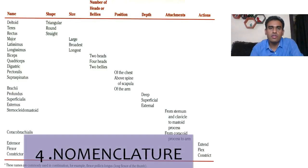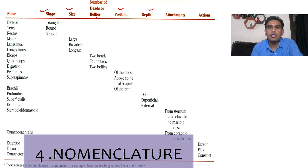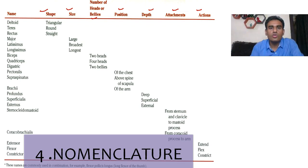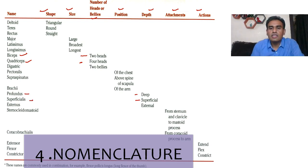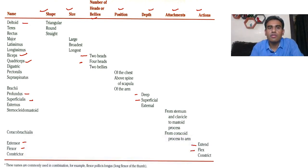This table shows the nomenclature of muscles — how muscles are named. Muscles are named according to their shape, size, number of heads, position, depth, attachments, and actions. For example, if a muscle has two heads, we call it biceps; four heads — quadriceps. If the muscle is deep, we call it profundus; if superficial, superficialis. If the muscle extends a joint or body part, we call it extensor; if it flexes, we call it flexor. If the muscle is triangular in shape, we call it deltoid; if straight, we call it rectus.